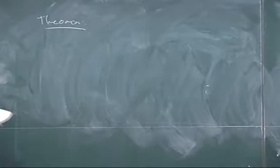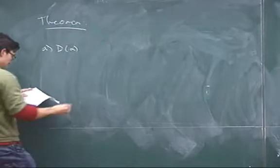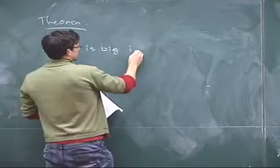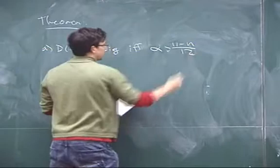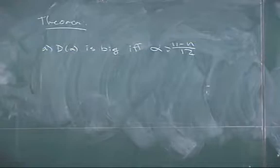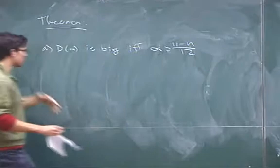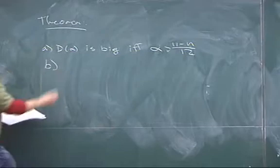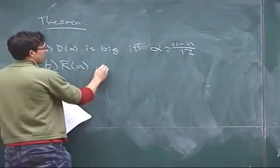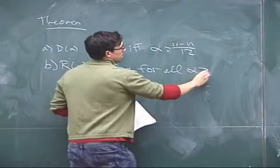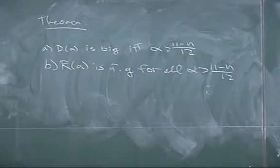The theorem: first, when is this divisor class big? It depends on n, reflecting the fact that the Kodaira dimension of M_{1,n} bar changes at n = 11. This divisor is big for a certain range of α, and then for all α in this range we prove it's finitely generated. When α is positive this basically follows from BCHM, but our proof is completely independent of that, and in fact we get this for even some negative values of α.